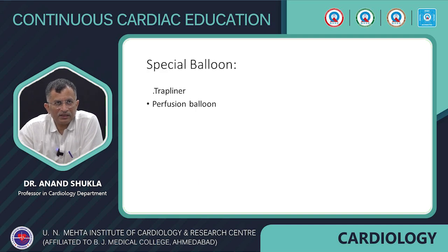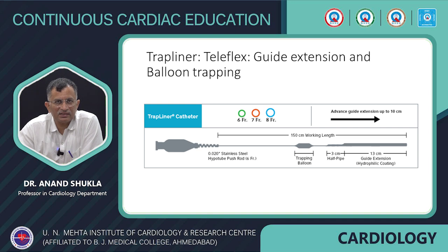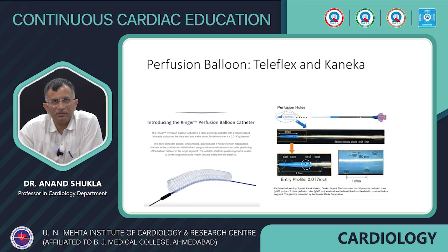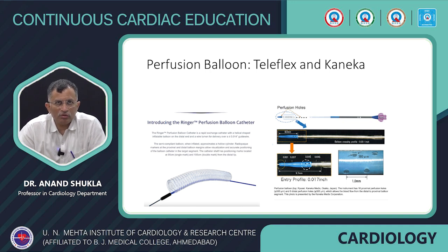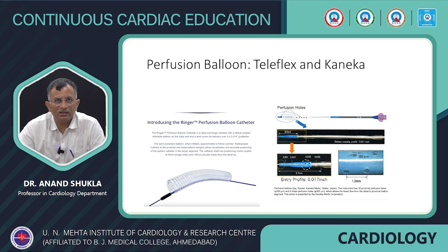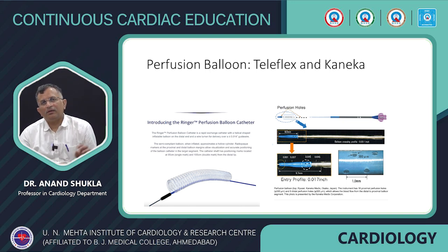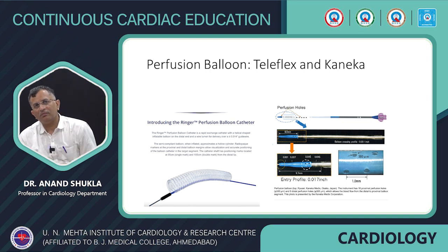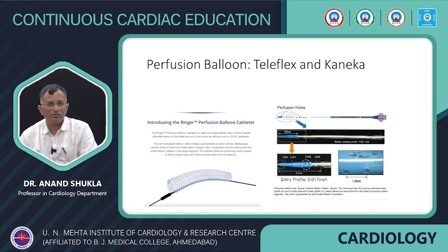Next are the specialized trap liner and perfusion balloon. The trap liner works as a guide extension as well as for trapping and is available in India. The perfusion balloon is important to keep in reserve — whenever there is coronary perforation, there are two types. One is the Teleflex type with a helical material that allows central perfusion when inflated. The other, marketed by Kaneka, has perfusion holes — 16 proximal and 8 distal — allowing coronary perfusion while the balloon is inflated. These are important balloons for complications such as dissection or perforation, to hold the artery and prevent pericardial extravasation.